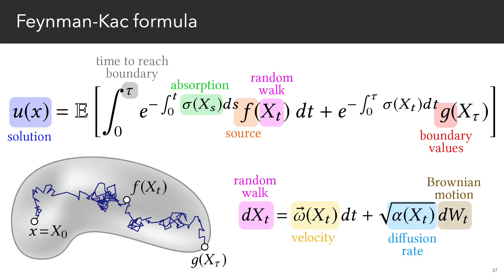Now, it's no coincidence that we use the same symbols alpha, sigma, and omega for both our PDE and SDEs. These perspectives are linked by the Feynman-Katz formula, which gives the solution to our main PDE as an expectation over many random walks.